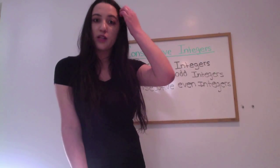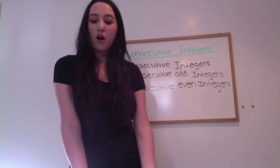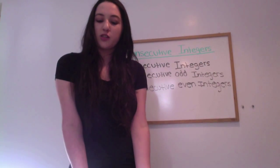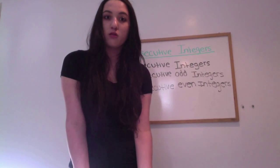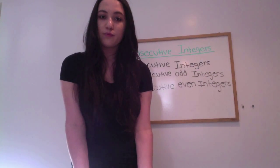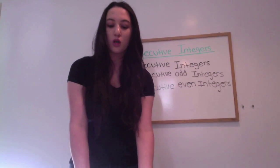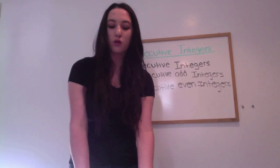Consecutive even integers are even integers that follow one another in order and start with an even number. Here's an example: two, four, six, eight.